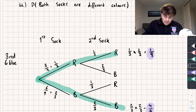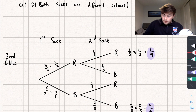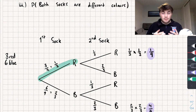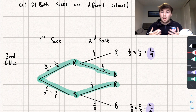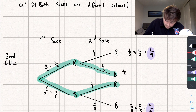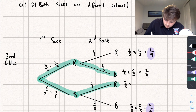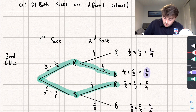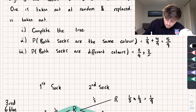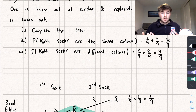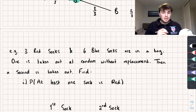The third part asks for the probability that both socks are different colors. That means red then blue, or blue then red. Multiplying along each branch: one third times two thirds is two ninths, and two thirds times one third is also two ninths. Adding these together: two ninths plus two ninths equals four ninths — that's the probability both socks are different colors.